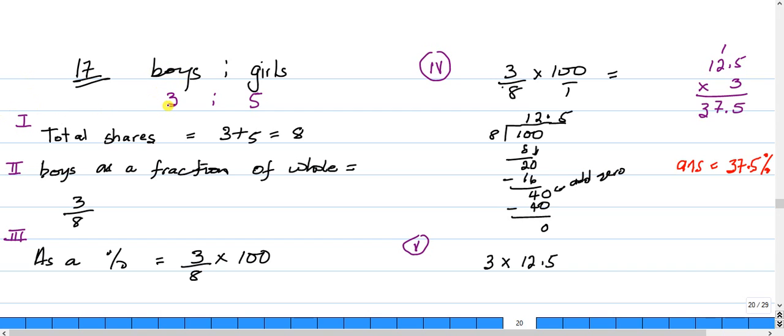So we have three to five, that's the ratio. Let's find the total number of shares. We add the terms three and five, which gives us eight. So boys as a fraction of the whole would be equal to three parts out of eight.